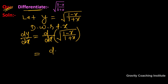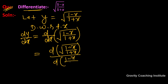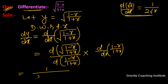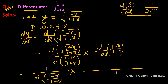Using the chain rule, we can write: d/dx[√((1-x)/(1+x))] = d/d((1-x)/(1+x)) [√((1-x)/(1+x))] multiplied by d/dx[(1-x)/(1+x)]. For the first part, we use the x^n formula: if we write √x as x^(1/2), then the derivative is 1/(2√x), so we get 1/(2·√((1-x)/(1+x))).